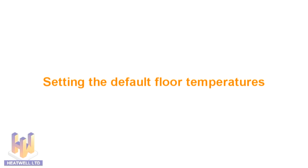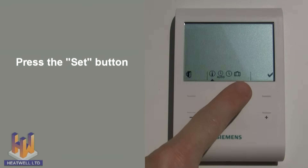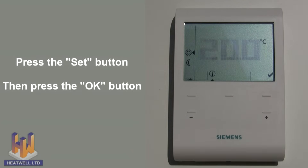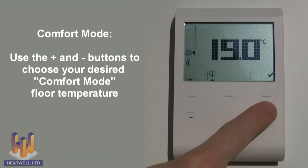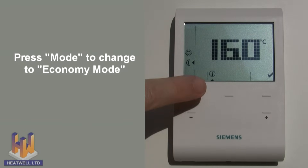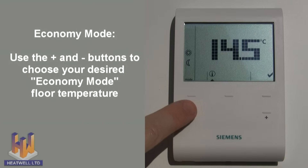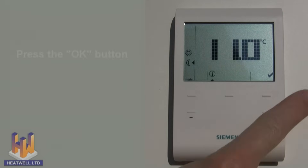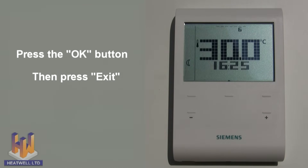Setting the default floor temperatures — these are the comfort and economy temperatures your unit will always automatically use. Press the set button so that the circled thermometer is selected and press OK. A marker will point at the sun symbol, which is comfort mode. Use the plus or minus buttons to choose your default comfort mode floor temperature, in this case 22 degrees. Now press the mode button to select the moon symbol for economy mode. Use the plus and minus buttons to select your default economy mode floor temperature, in this case 11 degrees. When you have chosen your default comfort and economy temperatures, press OK and then the exit button. Your default temperatures have now been set.